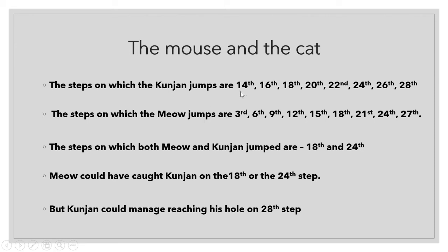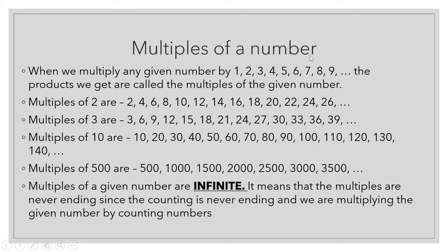Kunjan jumped on the multiples of 2 starting from the 14th, and Meow jumped on the multiples of 3 starting from 3. Multiples are the answers which come in the multiplication table of a number. When we multiply any number by 1, 2, 3, 4, 5, 6, 7, 8, 9, and so on, the products we get are called the multiples of the given number. Products are the answers we get after multiplying two or more numbers.